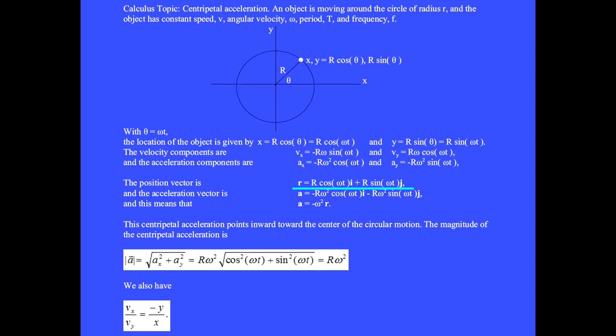The position vector r has this x and y component. We see that the acceleration vector a is the multiple omega squared times the position vector r.